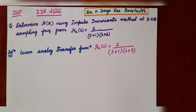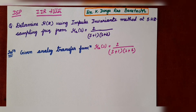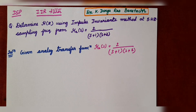What is the impulse invariance method? The impulse response of the analog filter is not changed. The response of the digital filter is a sampled version of the analog filter. Let us start the problem of IIR filter using the impulse invariance method.